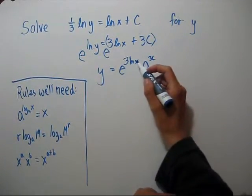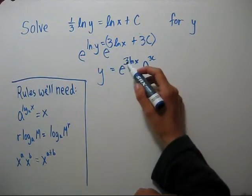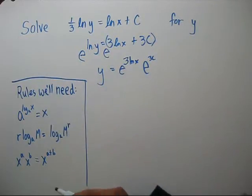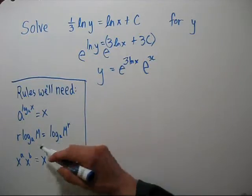I would like to get this x down. We have an e and an ln of x. However, we have that three in the front, so we can't use that rule. So let's move that three using this rule.